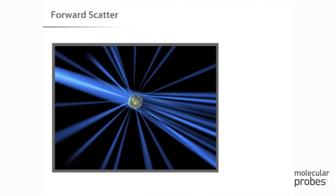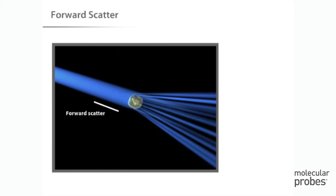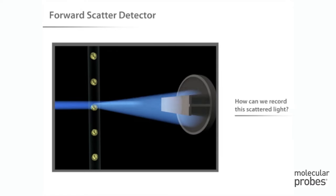As a cell passes through the laser, it will refract or scatter light at all angles. Forward scatter, or low angle light scatter, is the amount of light that's scattered in the forward direction as laser light strikes the cell. The magnitude of forward scatter is roughly proportional to the size of the cell, and this data can be used to quantify that parameter.